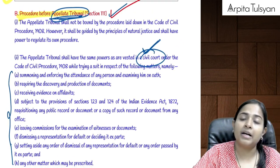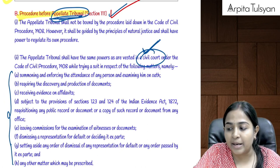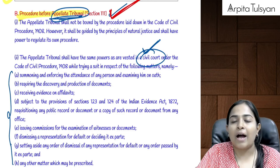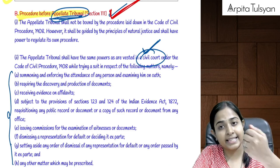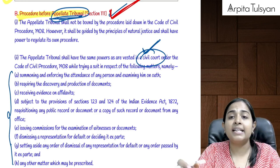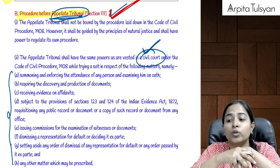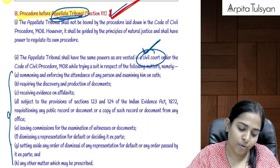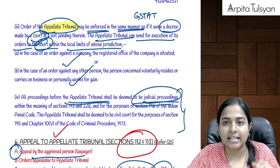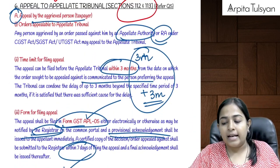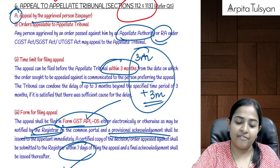The appellate tribunal has all the powers vested in a civil court and is regulated by the Code of Civil Procedure, but it is not strictly bound by it — it can also frame its own procedures.